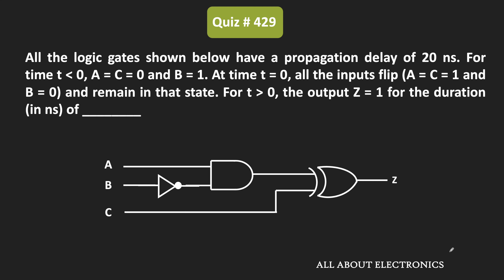Before time t equals 0, the inputs A and C are equal to 0 while B is equal to 1. At time t equals 0, all the inputs have been flipped — so now A and C are equal to 1 and B is equal to 0. We have been asked: for time t greater than 0, for how long will this output z remain 1?